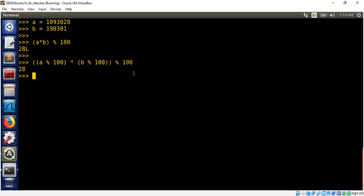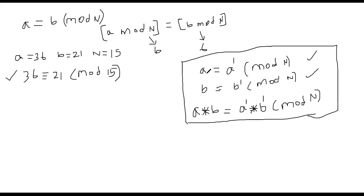As we can see, we can multiply two numbers very efficiently by first reducing them to their congruences and then applying the multiplication property. Since a' and b' are much smaller than the original numbers, the computation is quicker. That's the reason computing the reduced form first is so much faster.